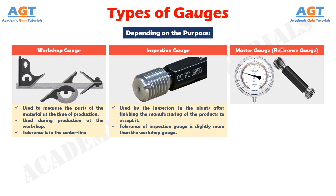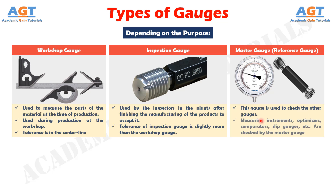Master gauge or reference gauge. A master gauge is defined as the gauge used to check the other gauges. The measuring instruments, optimizers, comparators, slip gauges, etc. are checked by the master gauge or reference gauge. All the other gauges are checked by this gauge so that it is called the master gauge. It is very useful because the efficiency of the other gauges depends on the master gauge. If the master gauge cannot check the other gauges or instruments properly then those gauges and instruments cannot give accurate results.